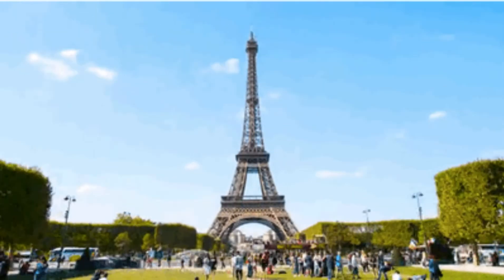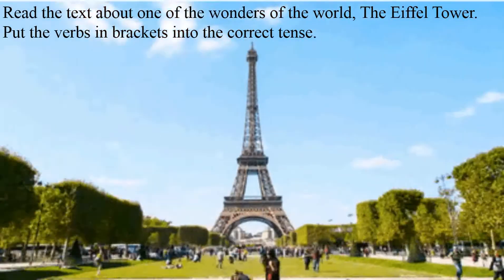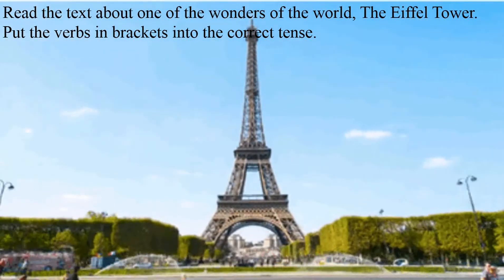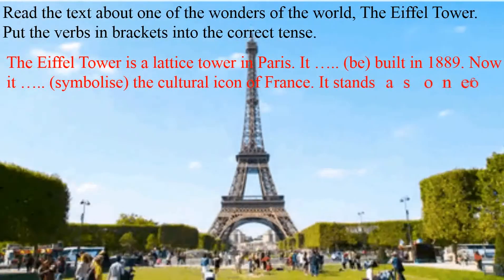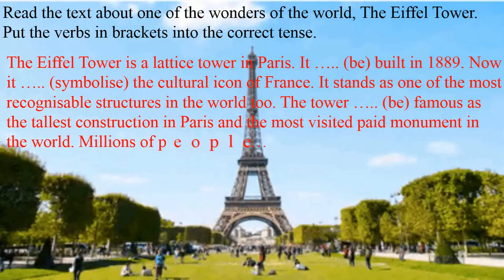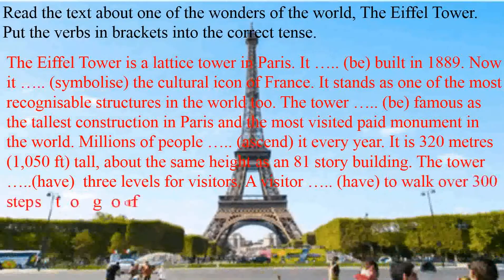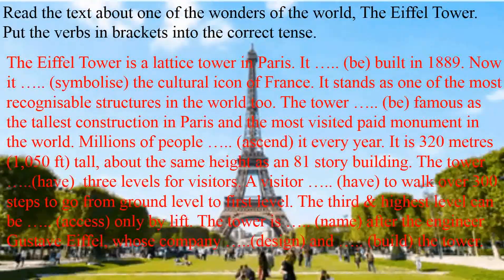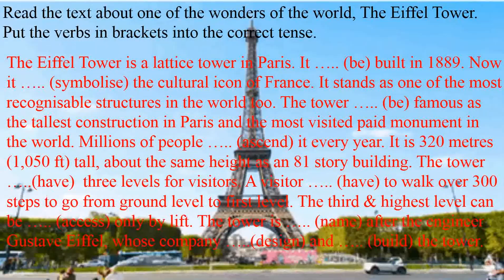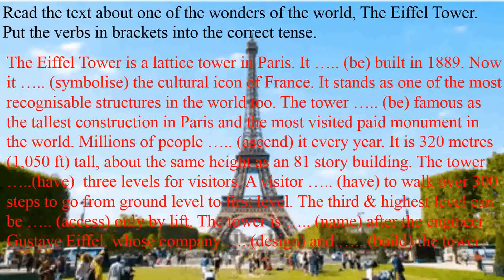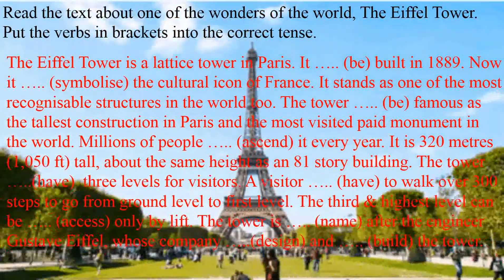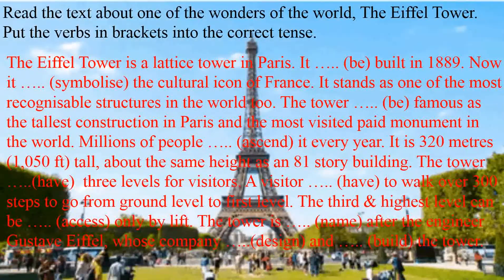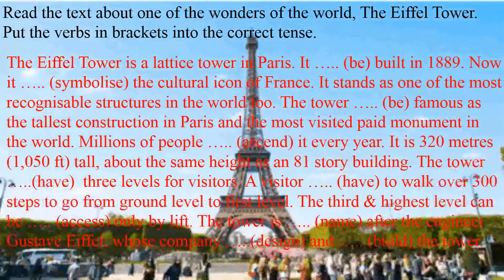Now read the text about one of the wonders of the world, the Eiffel Tower, and put the verbs in brackets into the correct tense. The Eiffel Tower is a lattice — meaning small net — tower in Paris. There is a gap to fill with the correct tense; the word in bracket is 'be' verb — built in 1889.